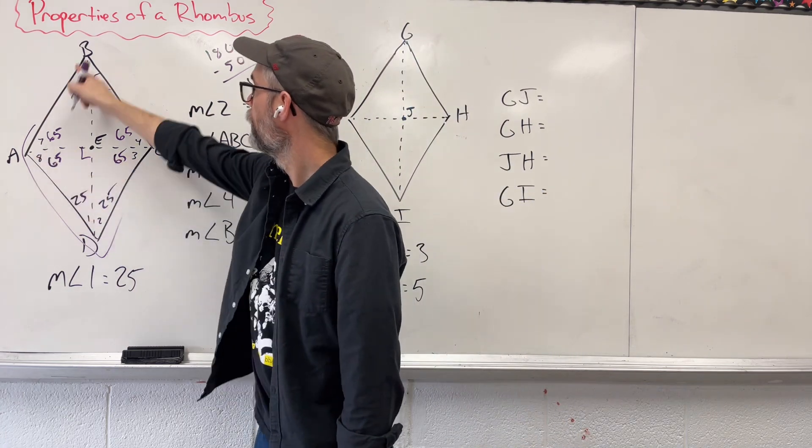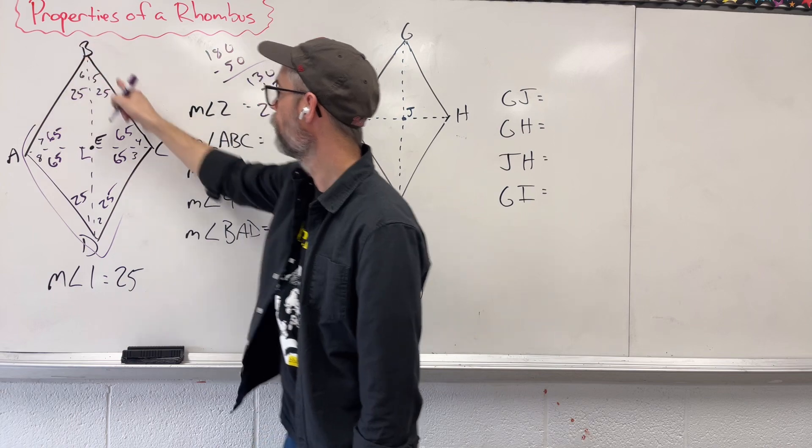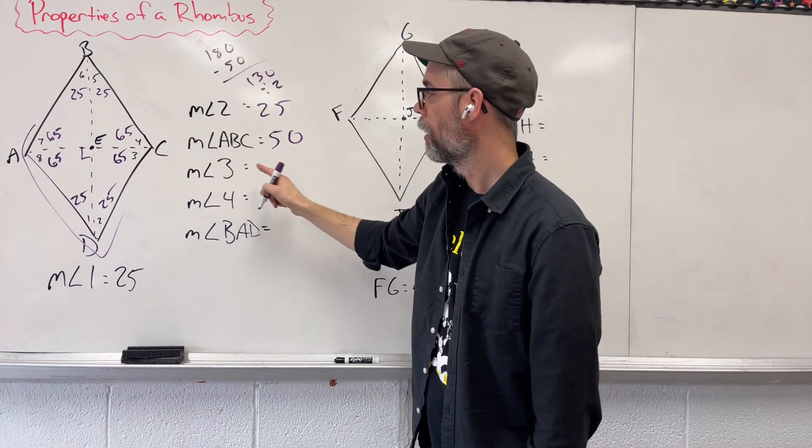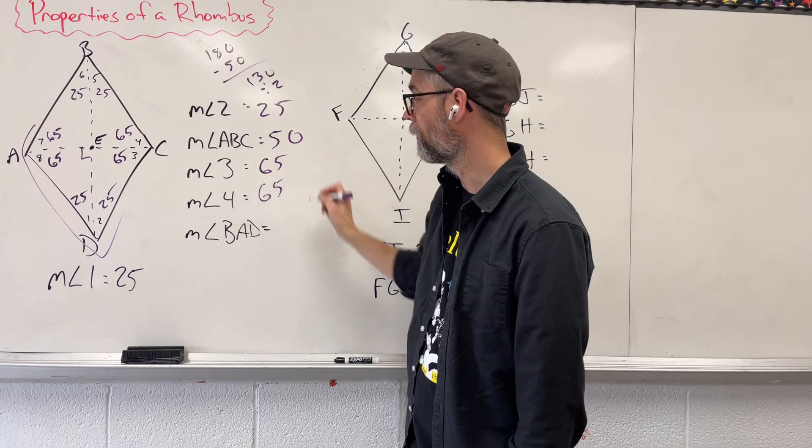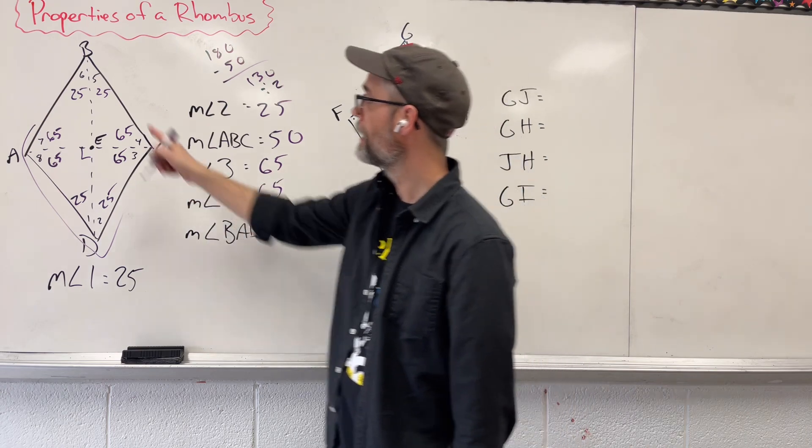ABC. ABC. So the whole big angle, that's going to be 50, 3 and 4 are both 65 and 65. And then BAD, BAD.